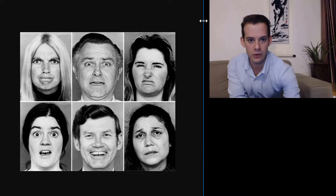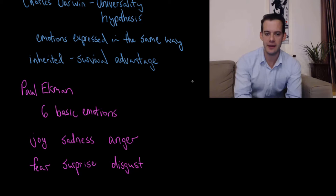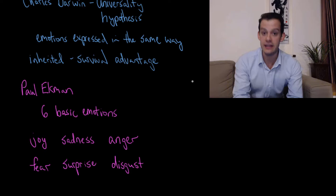And other evidence for this universality hypothesis is not just that other isolated tribes seem to express emotions in the same way, but also that we see people who are congenitally blind and they smile when they're happy. And yet they've never seen anyone else smile.